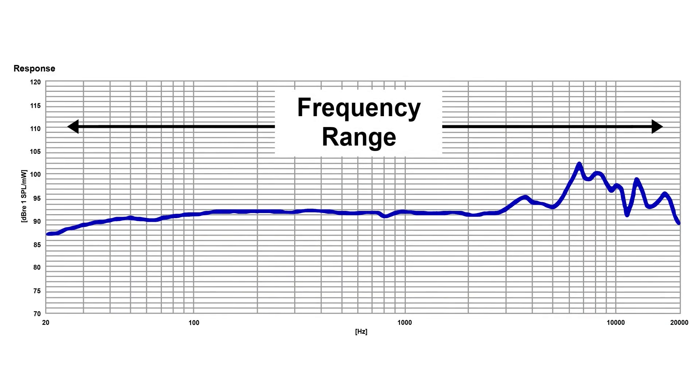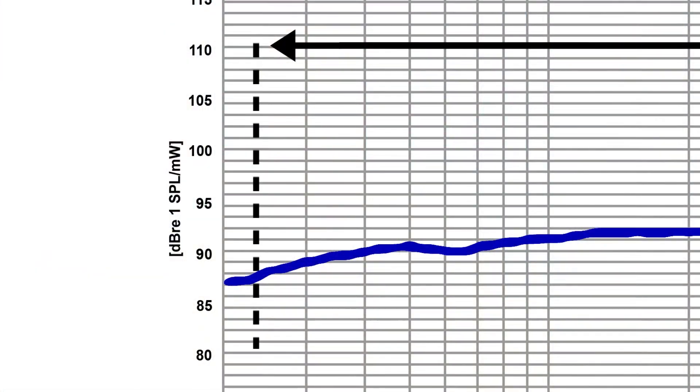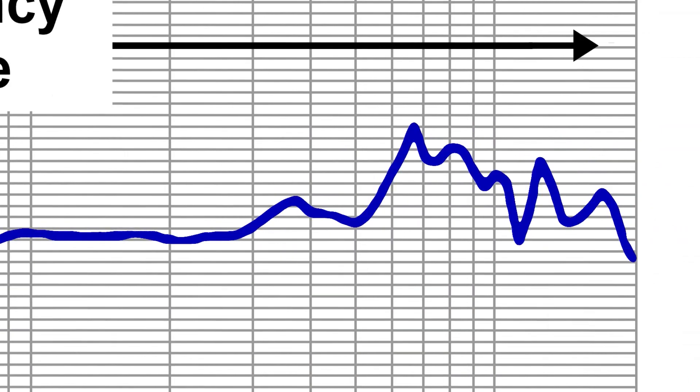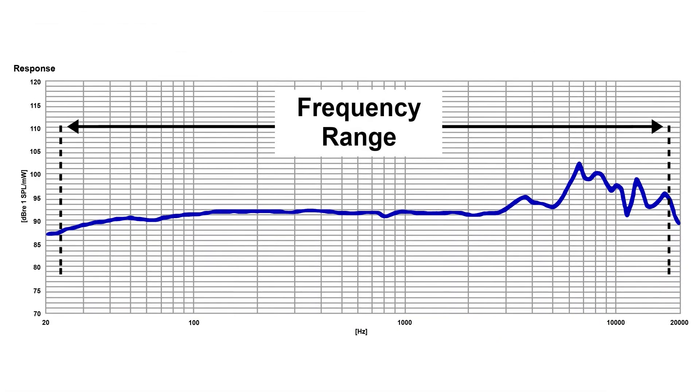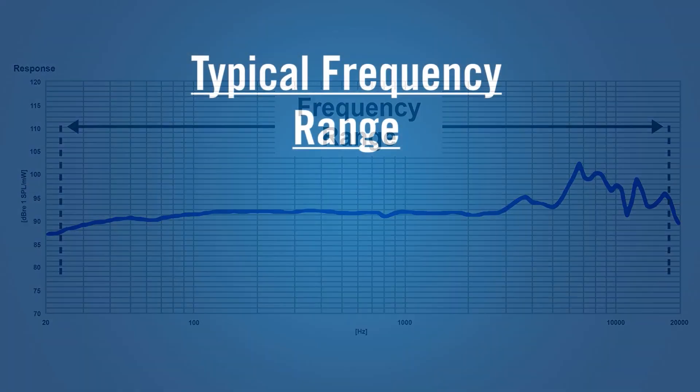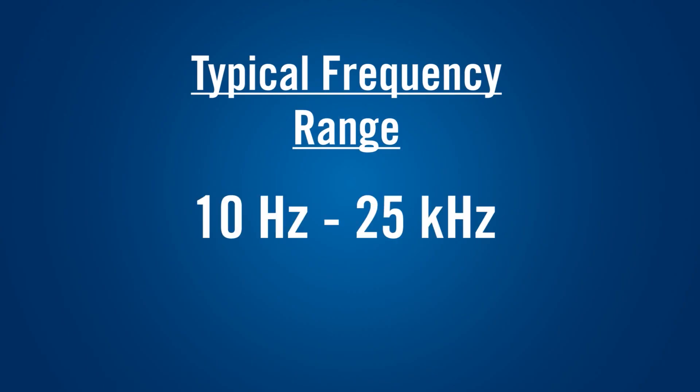The first one on the list: frequency range. What is frequency range and why is it important? A frequency range specifies the overall range that a headphone or earphone will operate from — where it starts producing sound to where it stops producing sound. Typically from the very lowest of the lows to the very highest of the highs.